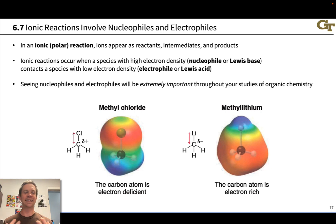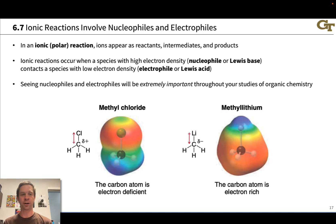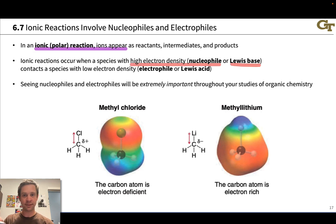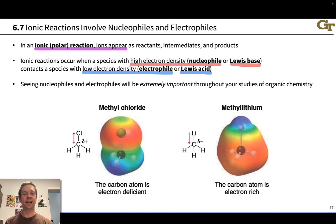Seeing this and keeping this idea in mind throughout your study of organic chemistry is going to be absolutely critical. Ionic reactions occur when a species with high electron density—which we're going to call a nucleophile or a Lewis base—gets together with a species with low electron density, which we're going to call an electrophile or Lewis acid.